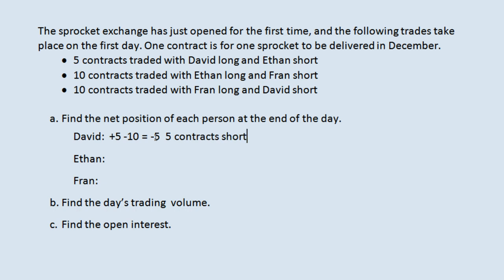The idea here is that when you make two trades in a forward market in opposite directions — one long and one short — they don't all remain open. So David does not have five contracts long and ten contracts short. At the end of the day they net out, and he has five contracts short.